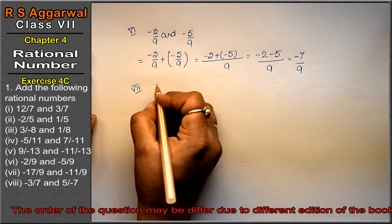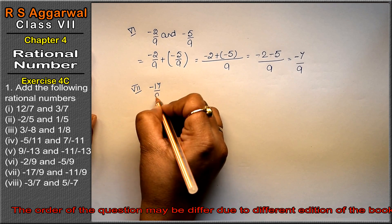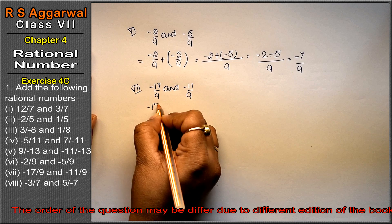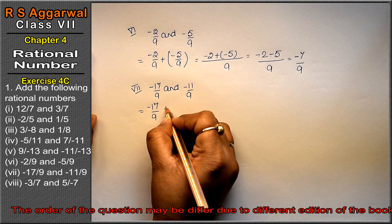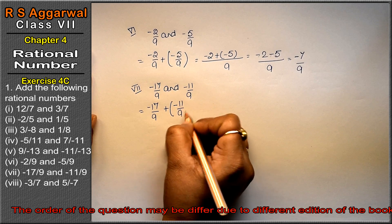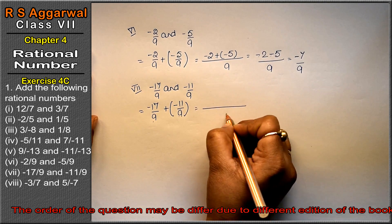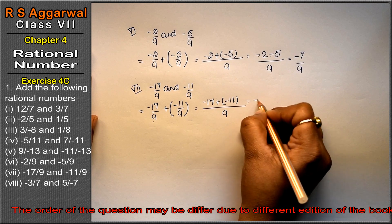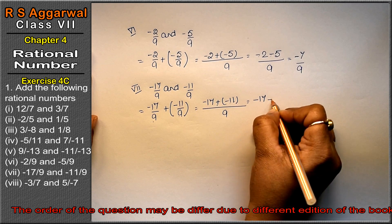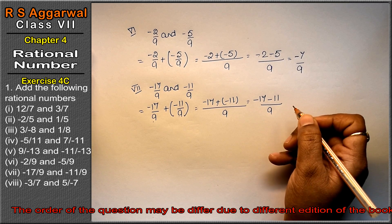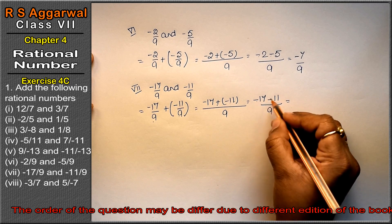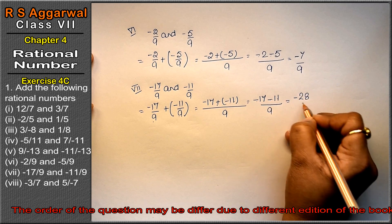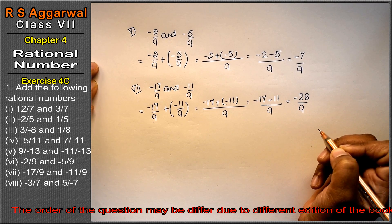7th part is minus 17 upon 9 and minus 11 upon 9. Adding: minus 17 upon 9 plus minus 11 upon 9. Denominator same, so 9. Opening signs: minus 17 plus minus 11. Both have the same sign, so add: 17 plus 11 = 28. Sign of both is minus, so minus 28 upon 9 is the answer.